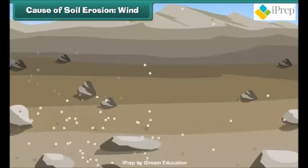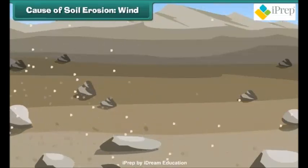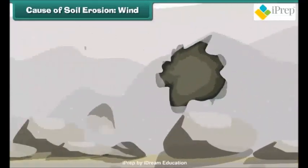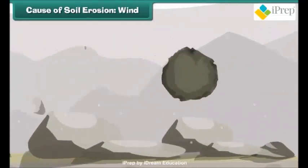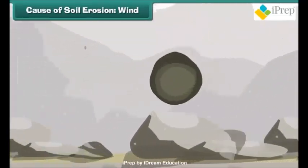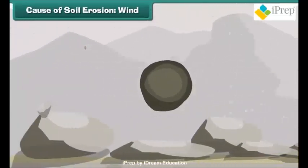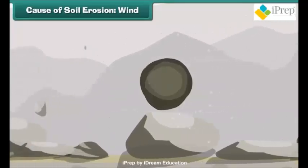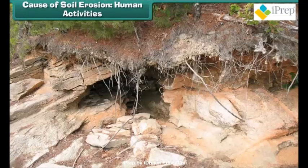The other agent responsible for soil erosion is wind. Wind picks up the finer soil particles and takes them to other locations. During storms, the heavy wind takes away the bigger soil particles to a distant place, and that causes soil erosion.